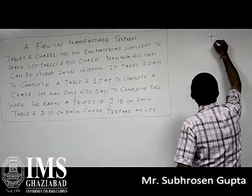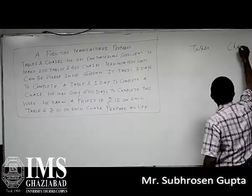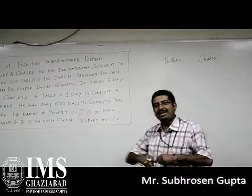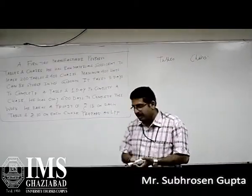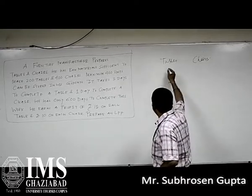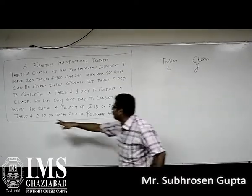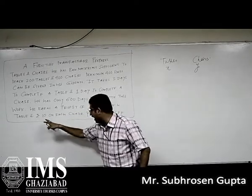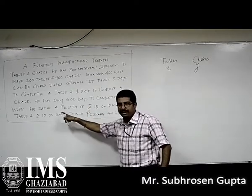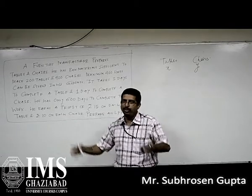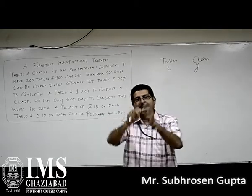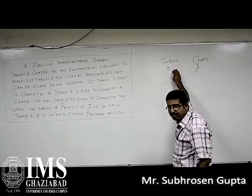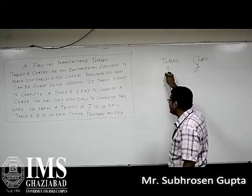So, tables and chairs. To find out whether we are going to put X or Y at which place, we need to study this aspect: he earns a profit of Rs.1515 on each table and Rs.1010 on each chair. We don't know how many tables or how many chairs. So, the fact which we don't know, we will put X and Y over there. We don't know the number of tables to prepare and we don't know the number of chairs to prepare. So, tables will be X and chairs will be Y.